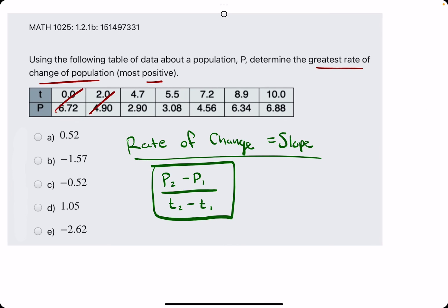However, from 2.9 to 3.08 there is an increase, so we might have to find the slope between these two points. From 3.08 to 4.56 there is an increase, so we will have to find the slope between those two.